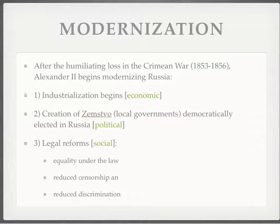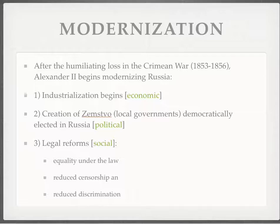There are two periods of modernization we're going to look at. One is after the Crimean War during the reign of Alexander II. The other is during the reign of Alexander III under his finance minister Sergei Witte, which you remember from your reading. After this humiliating loss in the Crimean War — which was over Christian lands — Alexander II said we really have to modernize Russia. The most important part of that was industrialization. One reason they lost the Crimean War was railroads: not being able to get supplies and troops to the front lines quickly enough.